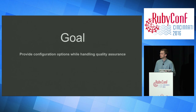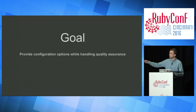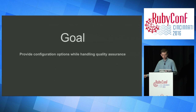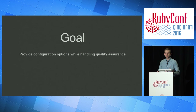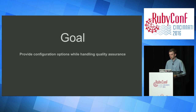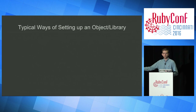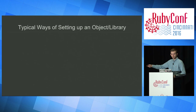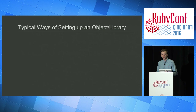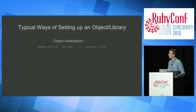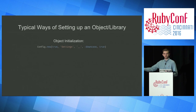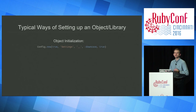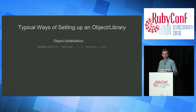One way we can approach this is through configurations — we want to provide configuration options while handling quality assurance. And a way you can do this is a singleton, meaning every time a user interacts with an object, it will have a global effect versus a very localized mess. A typical way to set up a config is a config object .new — very explicit, very simple, it's very obvious what's going on. You pass in five values.